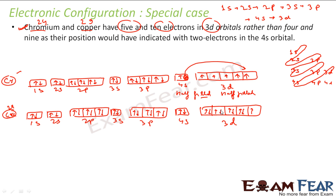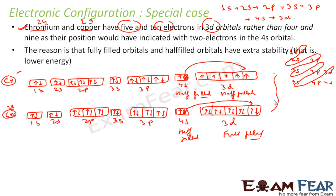So if you see, 3d is not even half-filled, not even full-filled. So here also, the electron will jump from 4s to 3d. With that, 3d becomes full-filled and 4s becomes half-filled. So this also provides extra stability. The electron moves just to provide extra stability.